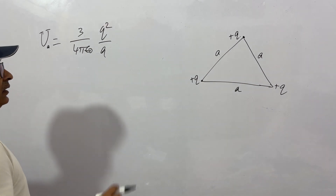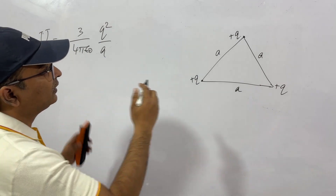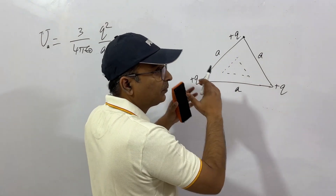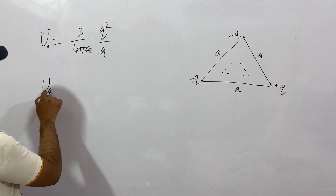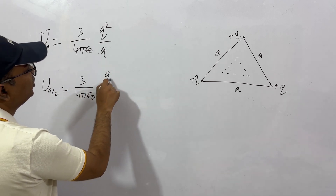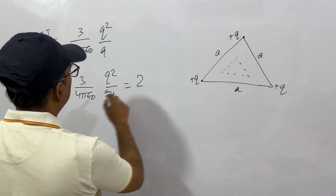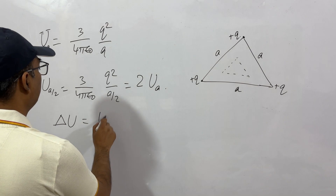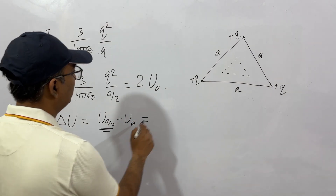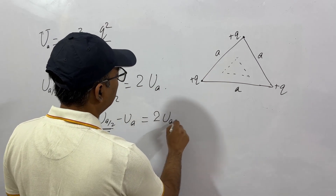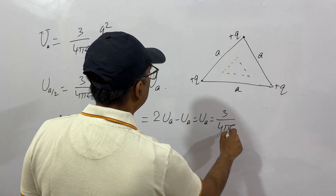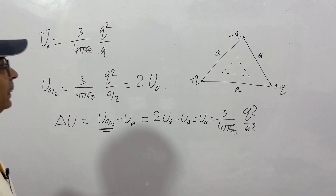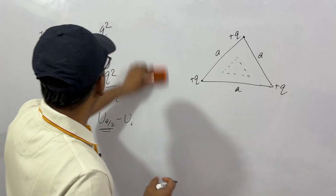The second part: what is the total work done in reducing the sides from a to a/2? For side a/2, the energy U(a/2) equals 3 by 4 pi epsilon_0 times q squared over (a/2), which is twice U(a). So the change in energy — the energy we must put in — is U(a/2) minus U(a), which equals 2U(a) minus U(a) = U(a). So we must apply energy equal to U(a) to reduce the sides to a/2.